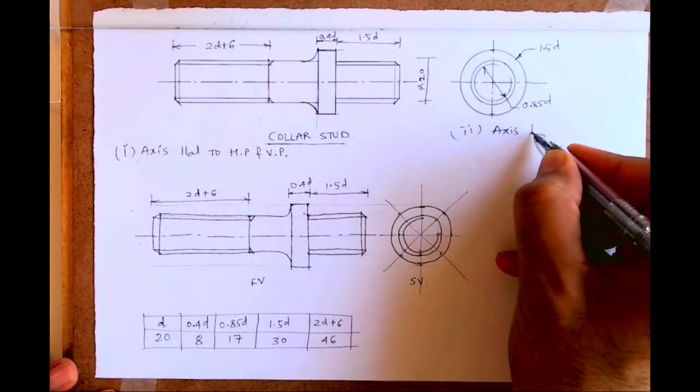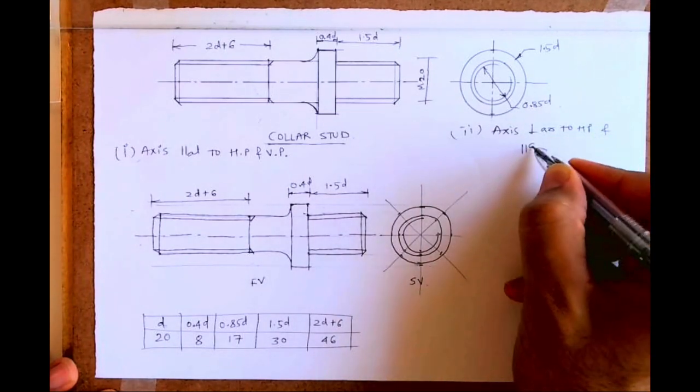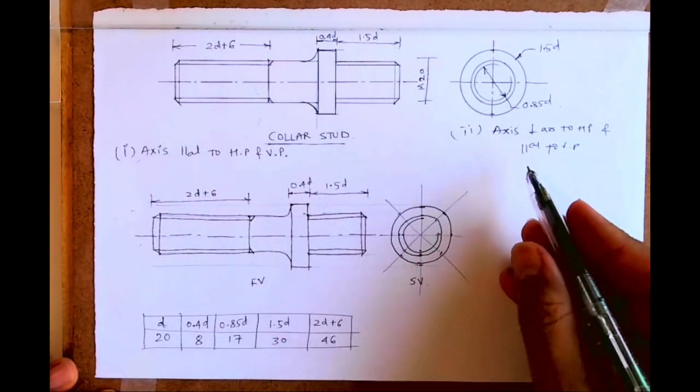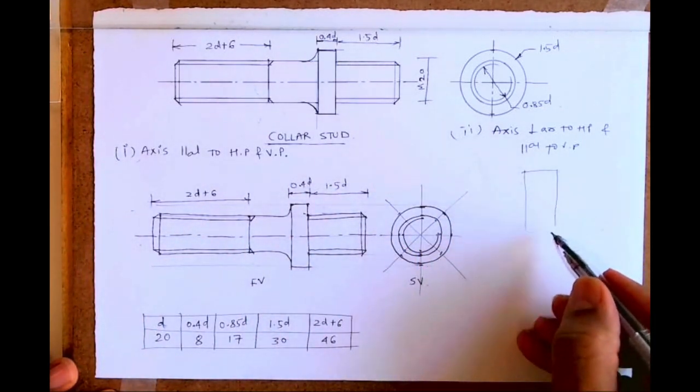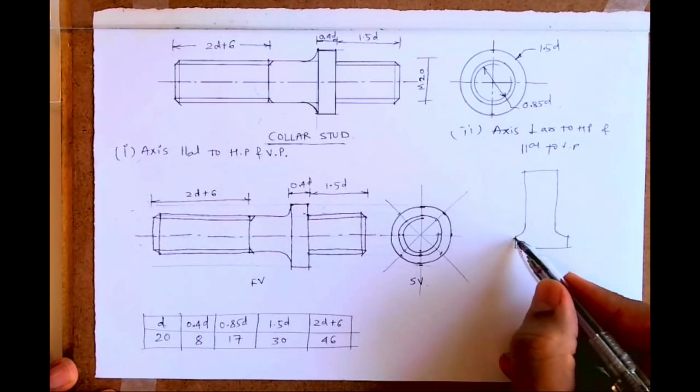Now let's say if axis is perpendicular to HP and parallel to VP. So that time we are going to draw position for the front view and side view. In front view, you will have this. I am doing a trial in this.